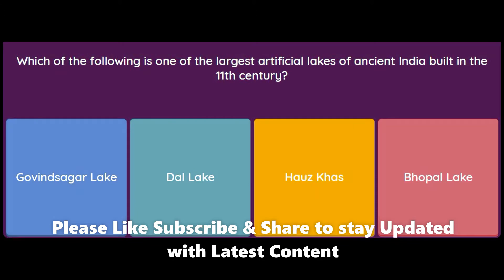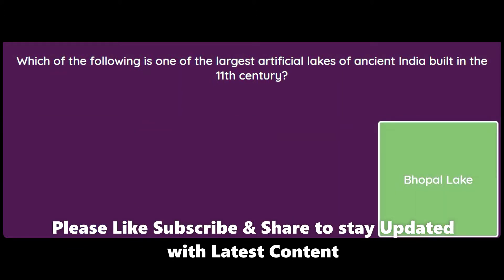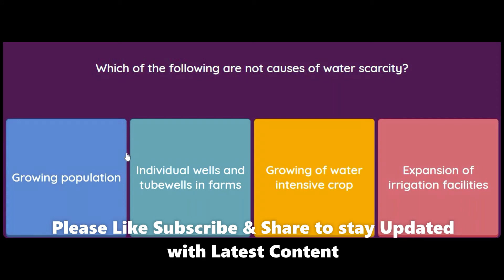Which of the following is one of the largest artificial lakes of ancient India, built in the 11th century — Govind Sagar Lake, Dal Lake, Hauz Khas Lake, or Bhopal Lake? The answer is Bhopal Lake, which was built in the 11th century.